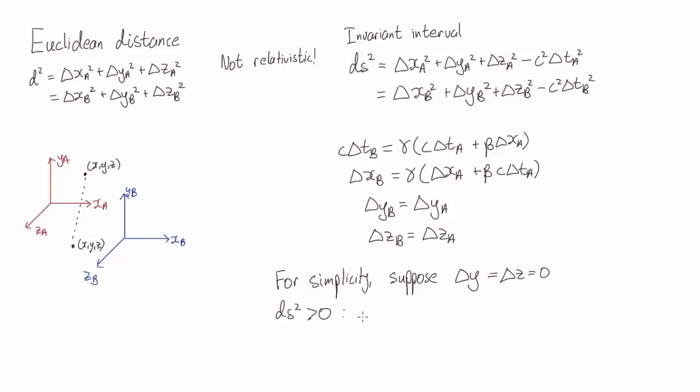So if ds squared is greater than zero, that tells us that delta x squared is greater than c squared delta t squared. Or in other words, delta x over delta t is greater than c. What this means is, if an object wanted to travel between these two events, it would have to travel at a speed, distance over time, greater than the speed of light.